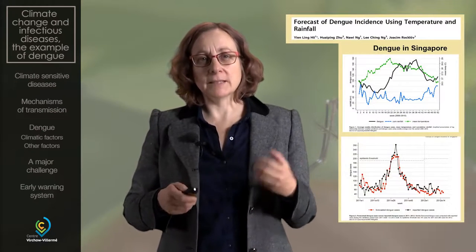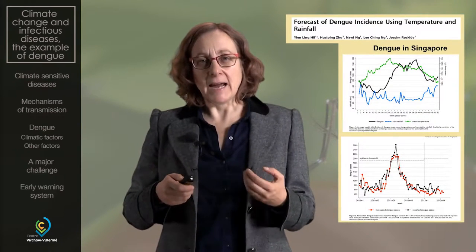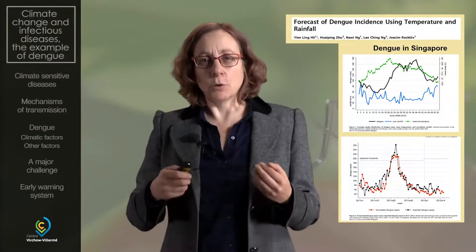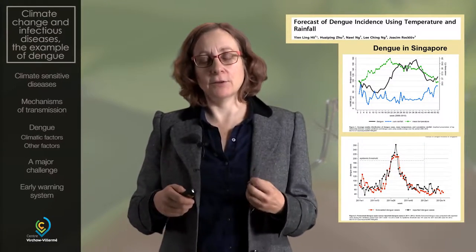We can develop new tools such as early warning systems. Because dengue is a climate-sensitive disease, it can actually be modeled based on temperature, precipitation, and humidity. A few studies have done just that, and have allowed modeling of dengue occurrence in a way that forecasts dengue occurrence based on climatic factors, consequently providing an early warning system to public health authorities to help prepare populations and the health system.